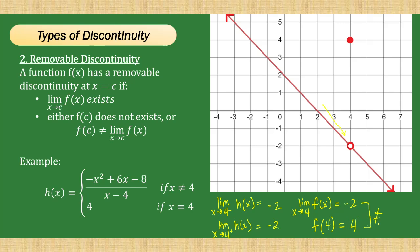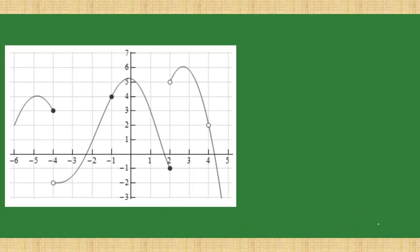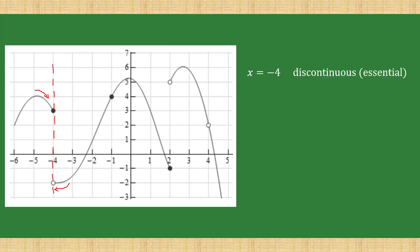On the next slide, we have a piecewise function with different sections. For each point, let's identify if the graph is continuous or discontinuous, and if discontinuous, what kind of discontinuity it exhibits. First, at x equals negative 4, we can see that the left-hand limit is obviously not equal to the right-hand limit. There is a gap and a break, so this is discontinuous and essential.